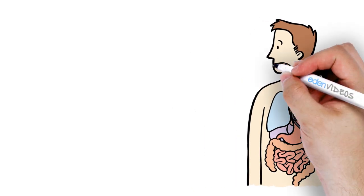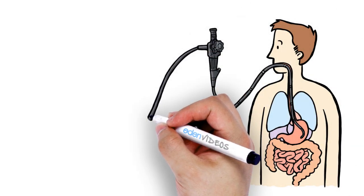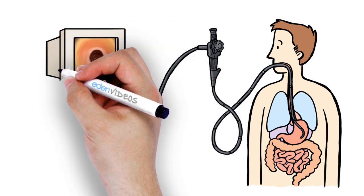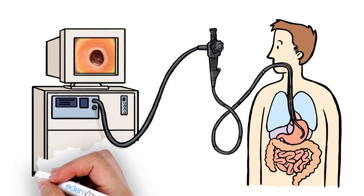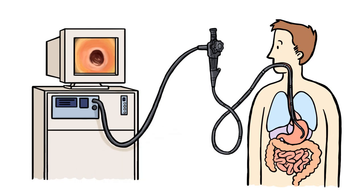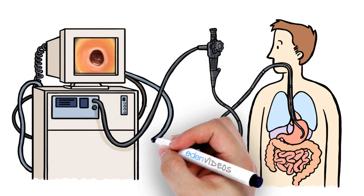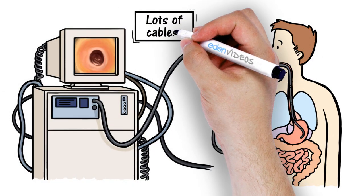In addition, the endoscope requires a physical connection or umbilicus that transmits light to illuminate the stomach or large intestine and returns the video images to display on a screen. The endoscope requires cables, and lots of them.